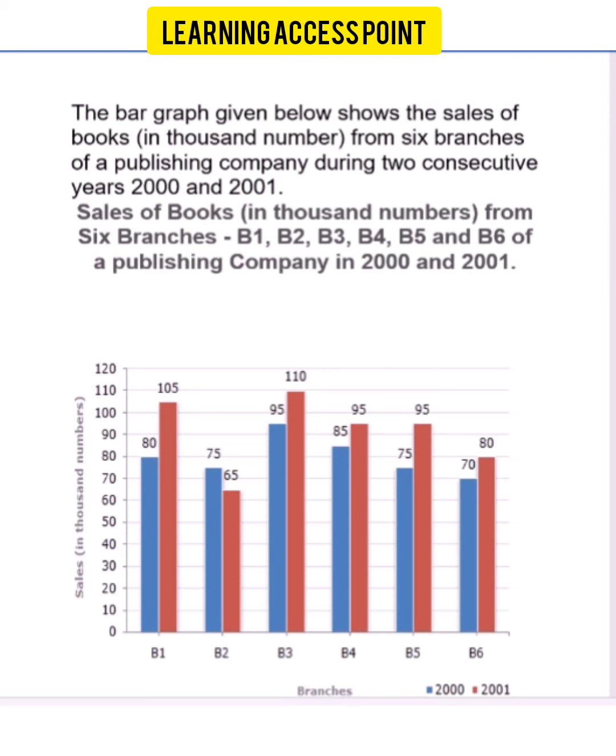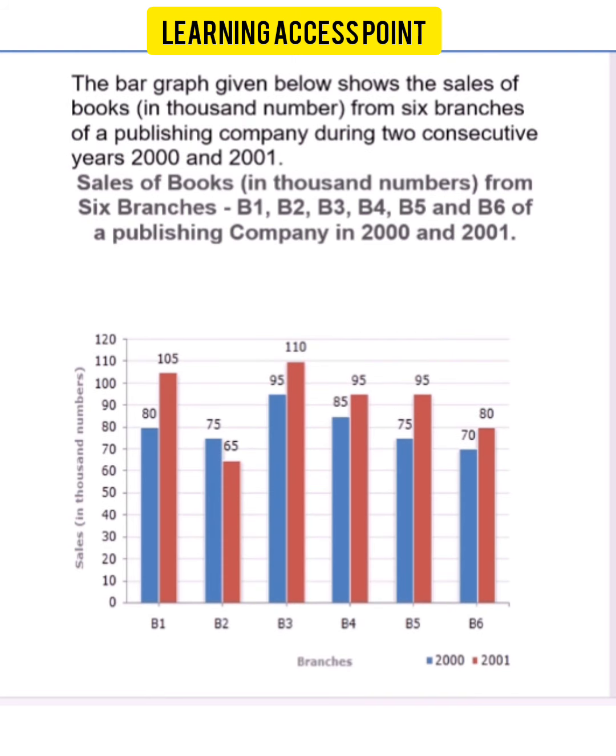Today our topic is data interpretation, where we learn about bar charts. The bar graph given below shows the sales of books in thousand numbers from six branches of a publishing company during two consecutive years, 2000 and 2001. Blue represents 2000 and red represents 2001. First, we have to analyze all the things given on the graph. Some values are clearly put on the graph, so let's begin with the first question.